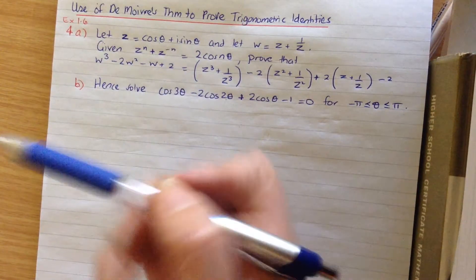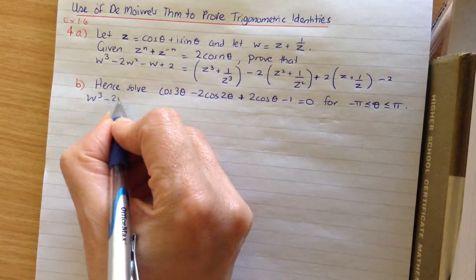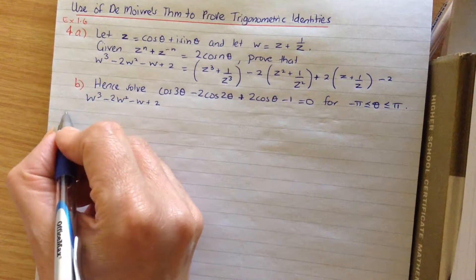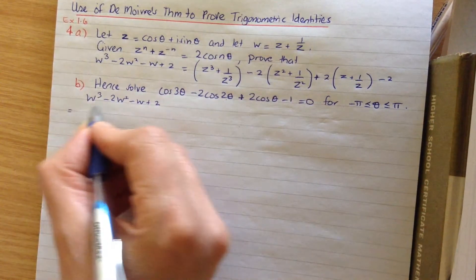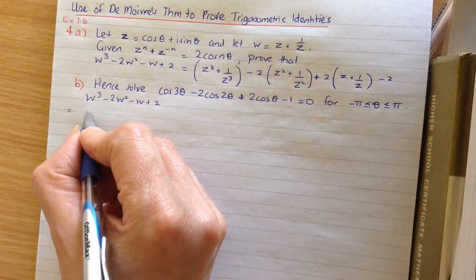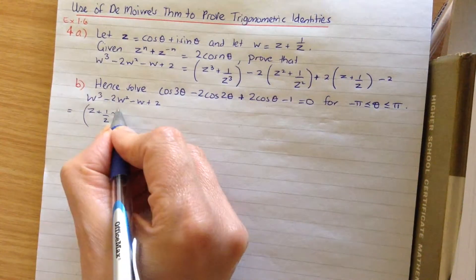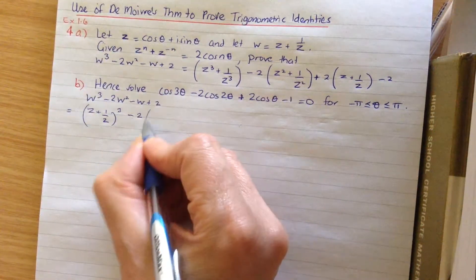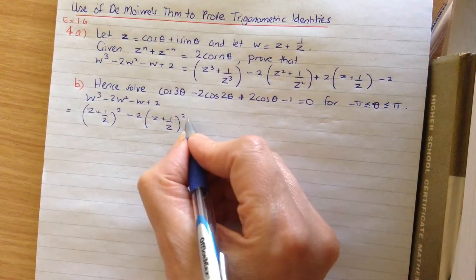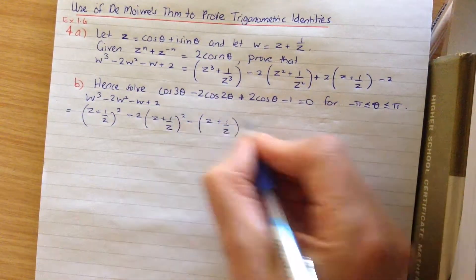So I'll write the left-hand side down: w cubed minus 2w squared minus w plus 2. I'm going to substitute w = z plus 1 over z into there. So we get z plus 1 over z, cubed, minus 2 times z plus 1 over z, squared, minus z plus 1 over z, plus 2.